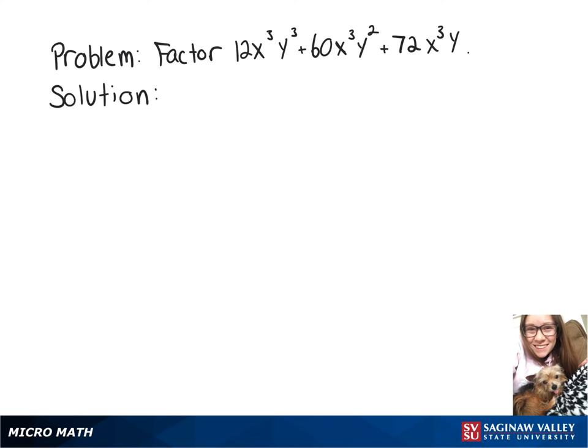We're going to factor 12x³y³ + 60x³y² + 72x³y. So to start out, we're going to factor out 12x³y, and then what we're left with after factoring that out is y² + 5y + 6.